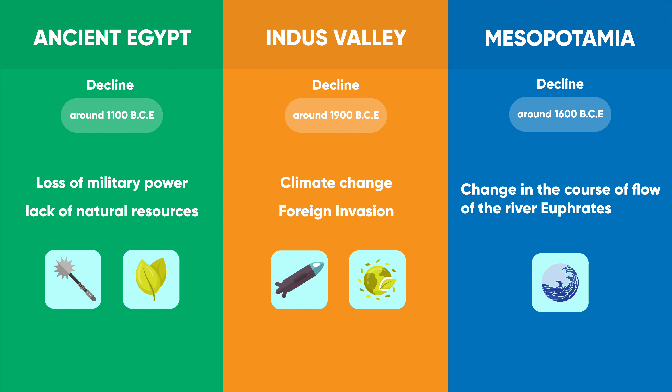Egypt fell into decline, with the two main reasons being loss of military power and lack of natural resources. The Indus Valley civilization started declining from about 1900 BCE. Changes in climate, decline of trade with Mesopotamians, drying up or flooding of the river, and foreign invasion might have been the reasons for the decline of this civilization.